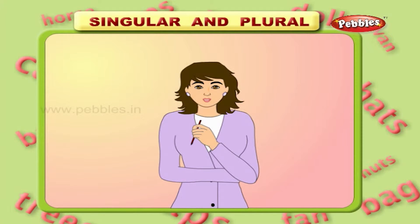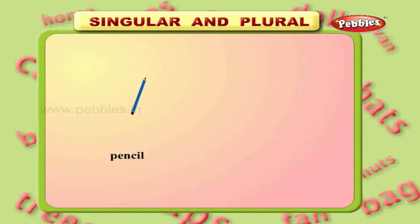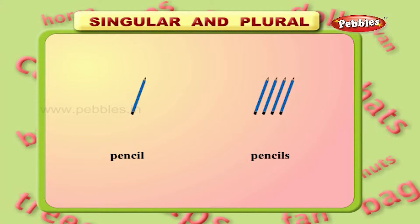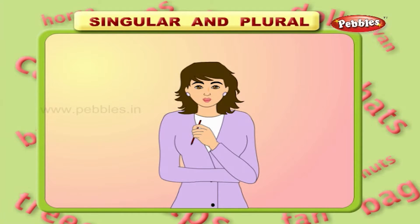For example, pencil is the name of a thing which denotes a single object. When you have more than one pencil, we call it pencils. Let us see some more examples for singular and plural.